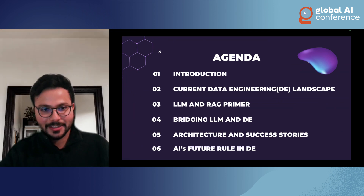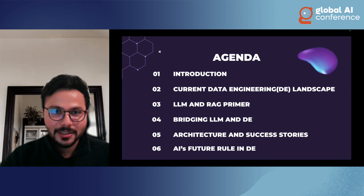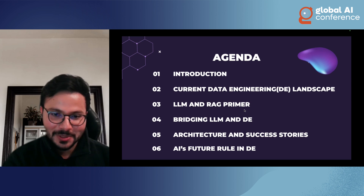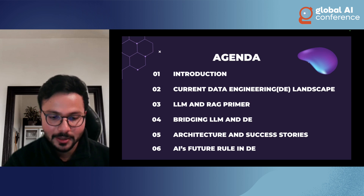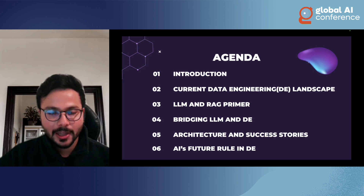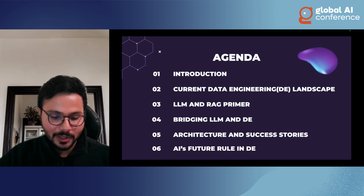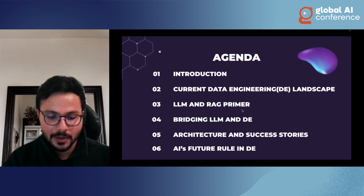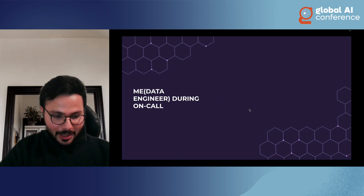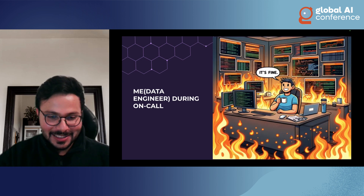Let's get into the current landscape of data engineering — that's the story we want to tell: how data engineering is getting impacted by AI. I'll give a primer on large language models and RAG, which will be important for the architecture Jing will cover later. I asked ChatGPT to generate a picture of an engineer who is on-call, and it did an amazing job illustrating how a typical data engineering on-call looks.